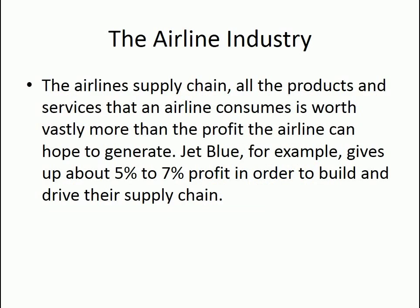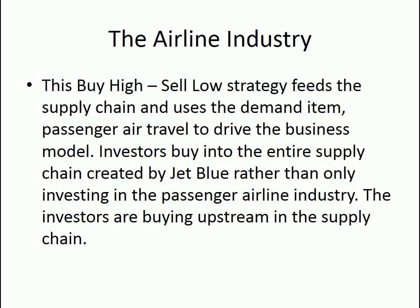The airline supply chain — all the products and services that an airline consumes — is worth vastly more than the profit the airline can hope to generate. JetBlue gives up about 5% to 7% profit in order to build and drive their supply chain. This buy high and sell low strategy feeds the supply chain and uses passenger air travel as the demand item to drive the business model. Investors buy into the entire supply chain created by JetBlue, rather than only investing in the passenger airline industry. The investors are buying upstream in the supply chain.